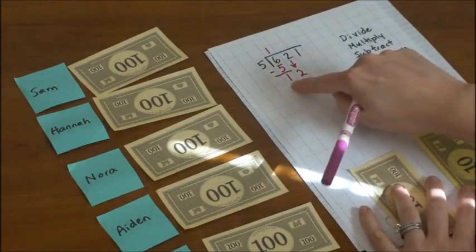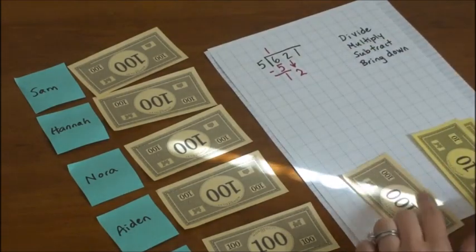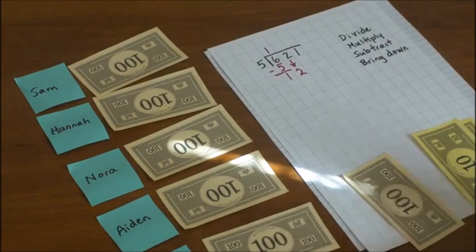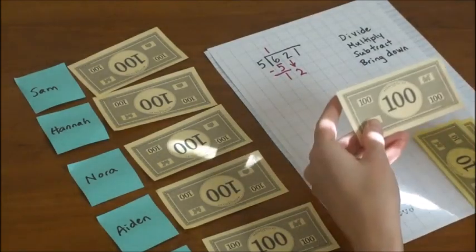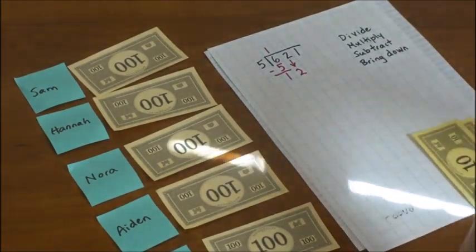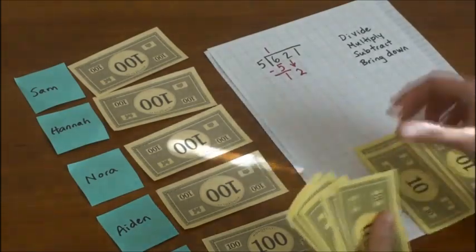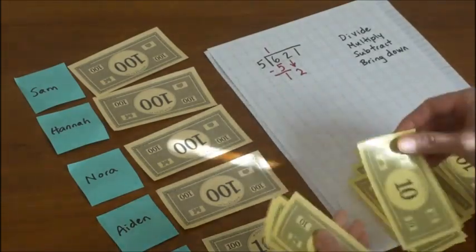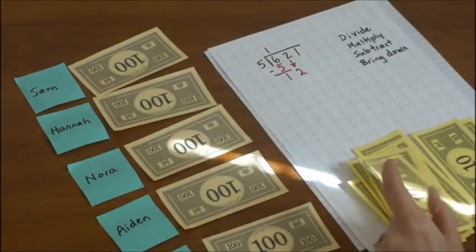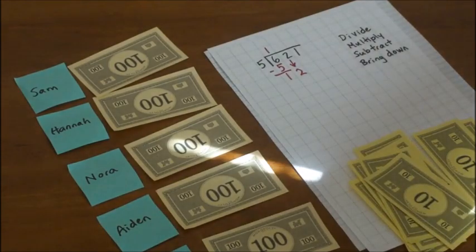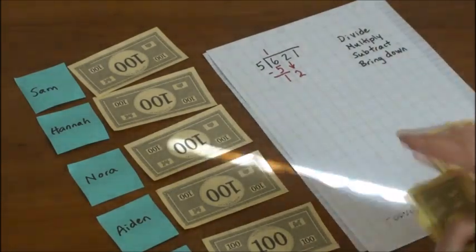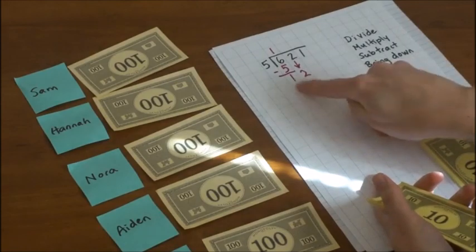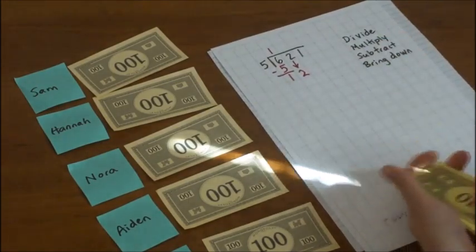And we see now that we have 100 and two more tens that still need to be divided up. But, or another way to think of that is as 12 tens. But I can't cut this $100 bill in half, so I'm going to trade it for 10 tens. So we have 1, 2, 3, 4, 5, 6, 7, 8, 9, and 10. So now I have 12 tens to pass out.